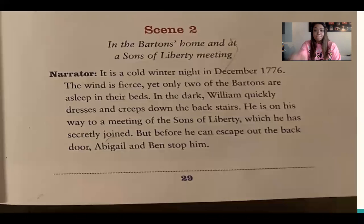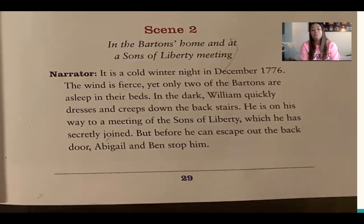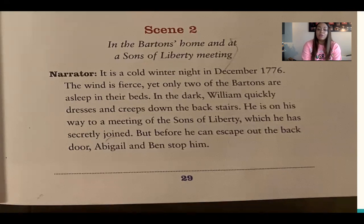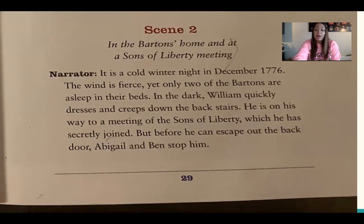We're going to pick a character, say what they're thinking or feeling, and support that with details from the text. So act 2, scene 2 is set in the Barton's home and at a Sons of Liberty meeting. It is a cold winter night in December 1776. The wind is fierce, yet only two of the Bartons are asleep. In the dark, William quickly dresses and creeps down the back stairs — he's on his way to a Sons of Liberty meeting he has secretly joined. But before he can escape out the back door, Abigail and Ben stop him.